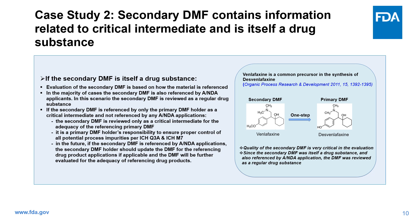In the example shown here, the primary DMF for the synthesis of its API desvenlafaxine refers to a secondary DMF for the penultimate intermediate venlafaxine. The quality of venlafaxine is very critical in the evaluation of the primary DMF. In this case, venlafaxine is itself a drug substance and the secondary DMF is also referenced by an ANDA application, so the secondary DMF is reviewed as a regular drug substance.